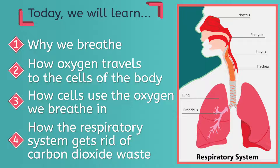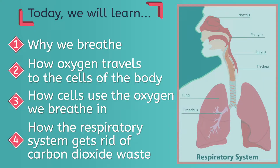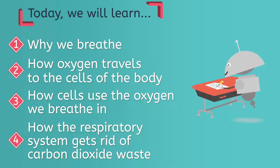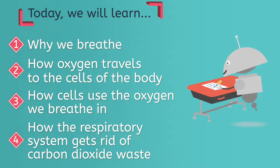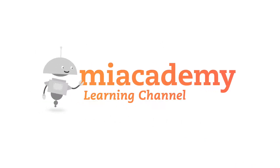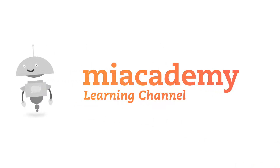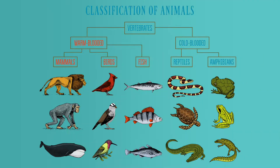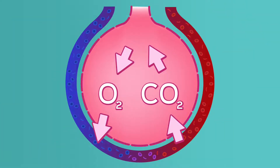If you're following along in your guided notes, pause this video to jot down your current best thinking about why we breathe. Us humans, other mammals, and birds all have similar respiratory systems. The purpose of the respiratory system is to provide oxygen to all the cells in the body and get rid of the carbon dioxide waste produced by those cells.